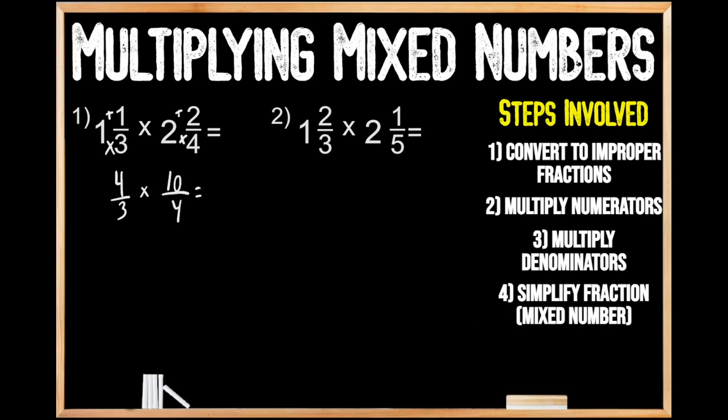Now we can move on to step number 2, where we're going to multiply our numerators. When we multiply 4 times 10, we get 40. Now step number 3, where we're going to multiply our denominators. When we multiply 3 times 4, we get 12, for 40 twelfths.